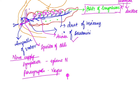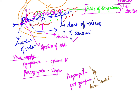The parasympathetic supply has preganglionic and postganglionic fibers. The preganglionic fibers synapse at the paraganglion within the pancreas. The postganglionic fibers arise from the ganglion and reach the acinar cells and ductal cells. The acinar cells are responsible for the production of enzymes and proenzymes.